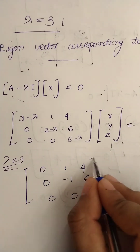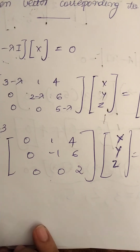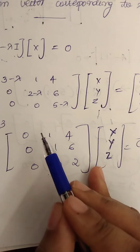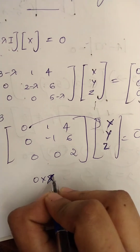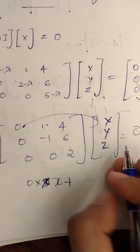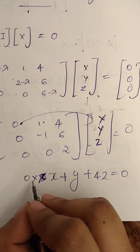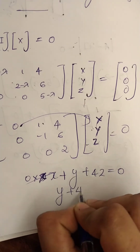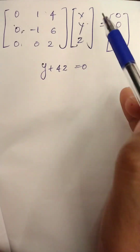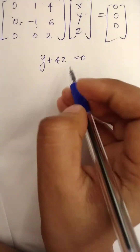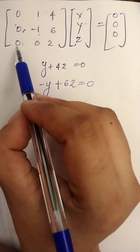Now for the eigenvector, we set up the matrix equation A minus lambda I times [x, y, z] equal to [0, 0, 0]. Substituting lambda equals 3, we get: 0 into x gives 0, so x will be 0 from the first equation. From the second equation: 0y plus 4z equals 0. The third equation also reduces. So we have 3 equations to analyze.